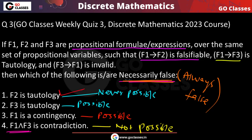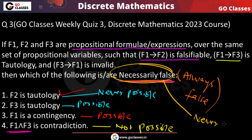Necessarily false means always false, which means never possible. So the answer is option A and option D. Both are necessarily false given the conditions stated in the question.